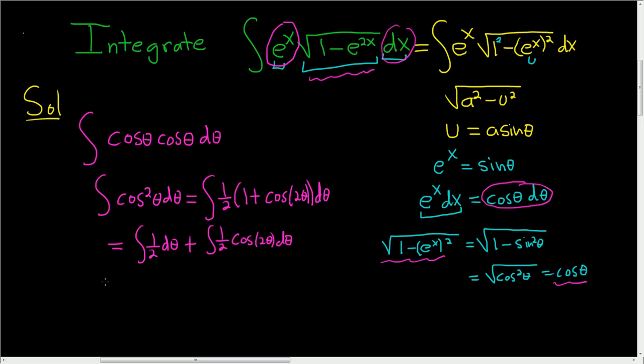Kind of a fun problem. We integrate the first one, so we get 1 half theta. And to integrate cosine of 2 theta, you just divide by 2. So this will be plus 1 half, and now we're dividing by 2, so we're going to get 1 fourth, and then sine 2 theta plus c. The derivative of sine is cosine, and when you have a number here, you just divide by that number.